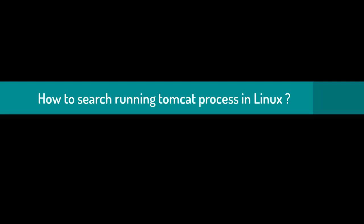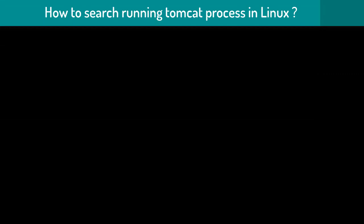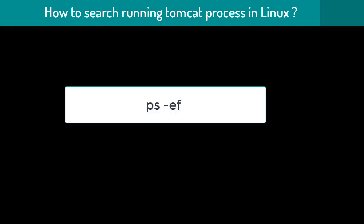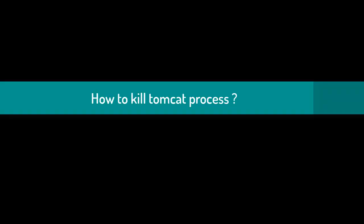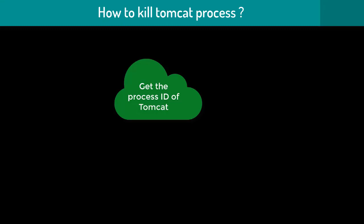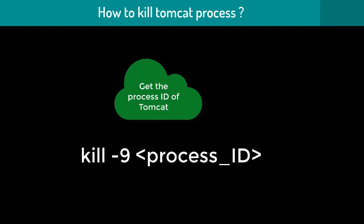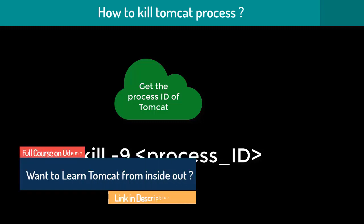How would you search for the Tomcat process in Linux? Make sure you can answer this, as it is a very generic OS-related question. In Linux, we use the process command ps — specifically ps -ef — and pipe it into the grep command to search for Tomcat: ps -ef | grep tomcat. This gives you a process ID. To kill the process, use the kill -9 command followed by the process ID — the -9 flag forcefully kills any process.